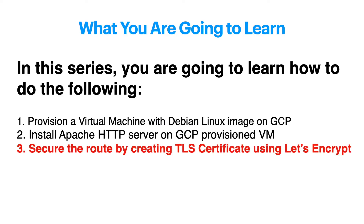This is a video series broken down into 3 different parts. In our previous videos, you saw how you can provision a virtual machine with a Debian Linux image on GCP. You also saw how to install an Apache HTTP server. If you missed it, be sure to go back and watch those. In this video, we will secure our layout by creating a TLS certificate using Let's Encrypt.